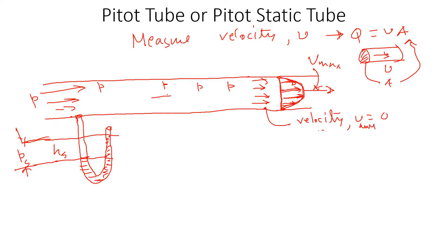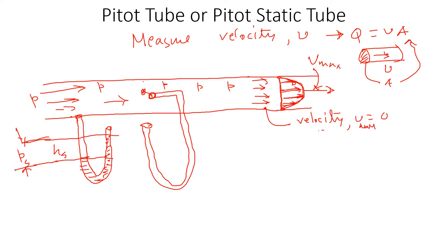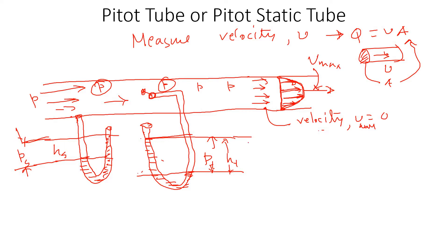Now, if I have another manometer connected in the middle of the pipe, flow is coming this way. At this center point, I have both the fluid pressure inside the tube and also velocity. So I will have more displacement of the manometer fluid. This is the pressure that has both dynamic pressure — the velocity head — and the static head. So we can say the total pressure difference, or total height H_T. The total pressure at this point is the velocity head, or dynamic pressure, plus the static pressure.